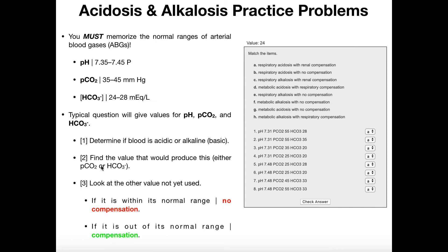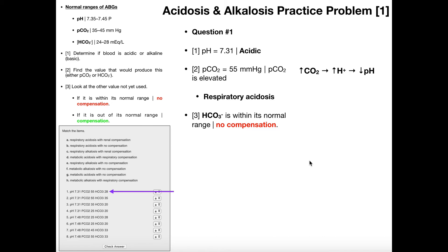Then in step two, we find the value that would produce this effect — either pCO2 or bicarbonate — to see which one is causing the acidity or alkalosis. In step three, we look at the other value not yet used. For example, if we determine that the pCO2 value caused the acidity, then for step three we look at bicarbonate and see if that value is within the normal range or outside of it. Let's work an example to make this clearer.